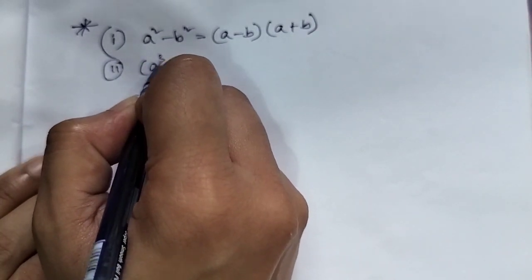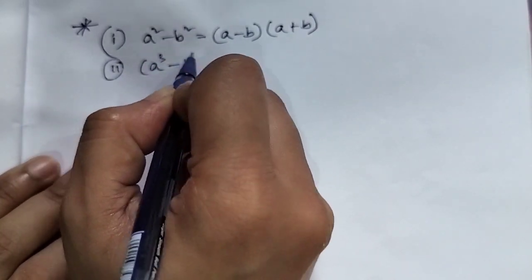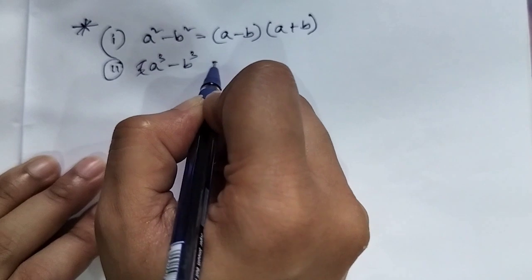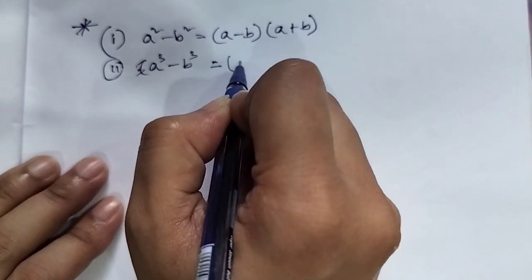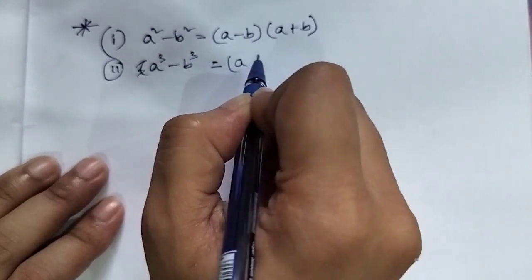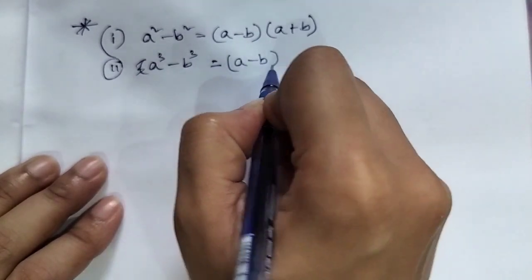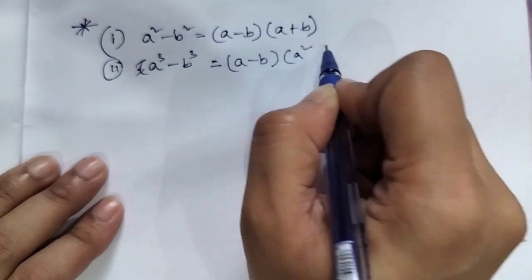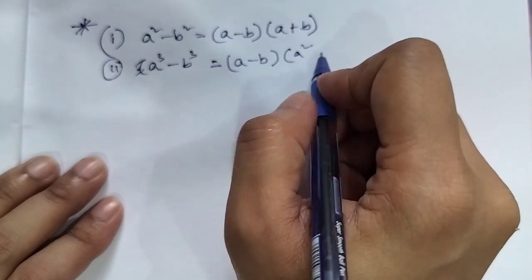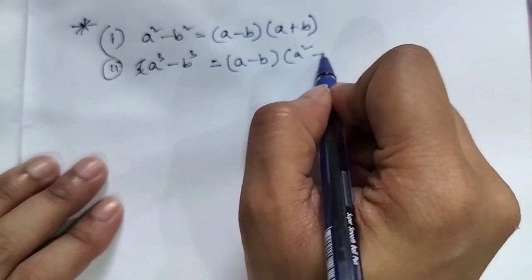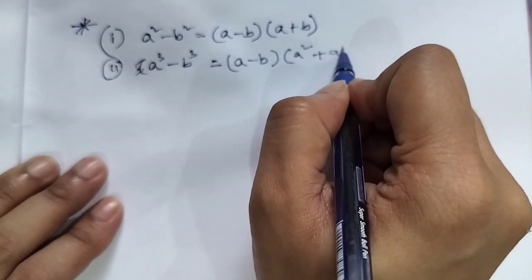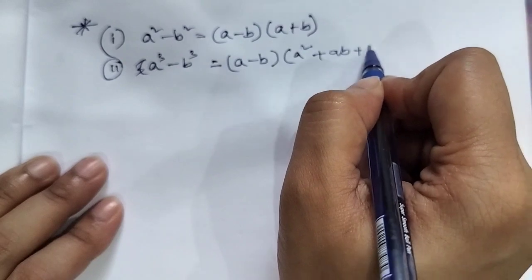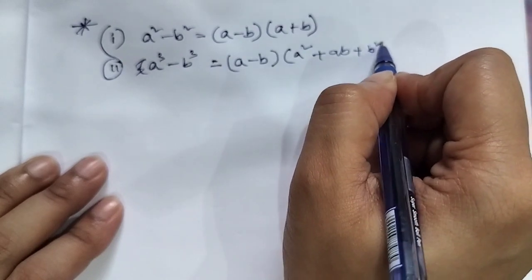a cube minus b cube formula: a cube minus b cube equals (a minus b)(a square plus ab plus b square).